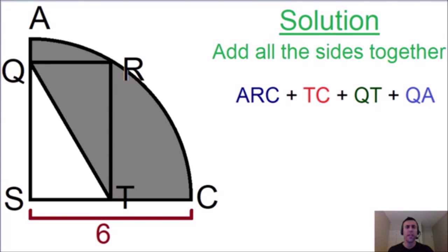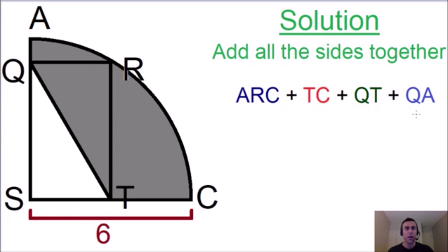The only thing we need to do to find the solution for this riddle is add all of the sides together — that's the idea of the perimeter. A perimeter is just adding all of the sides of any shape. We're going to add arc ARC with side TC, with side QT, and with side QA.